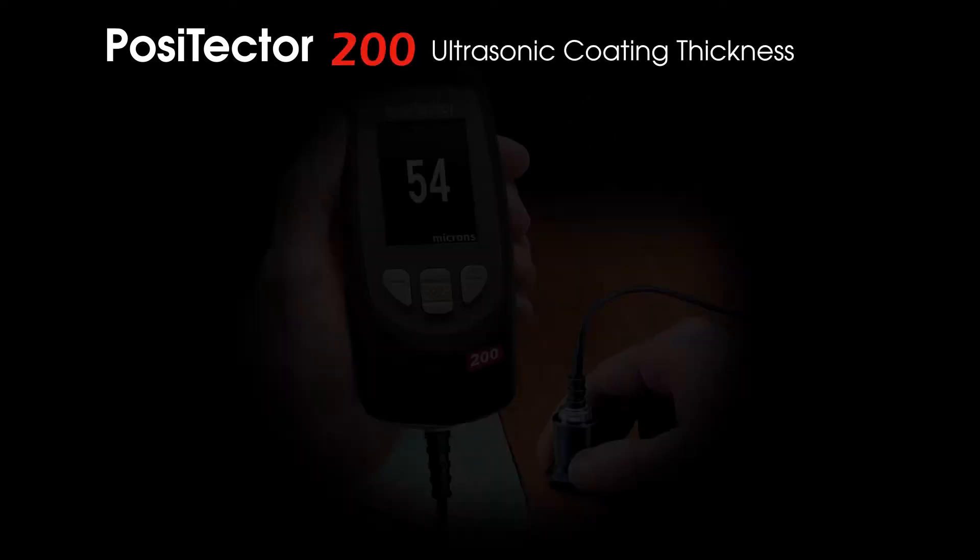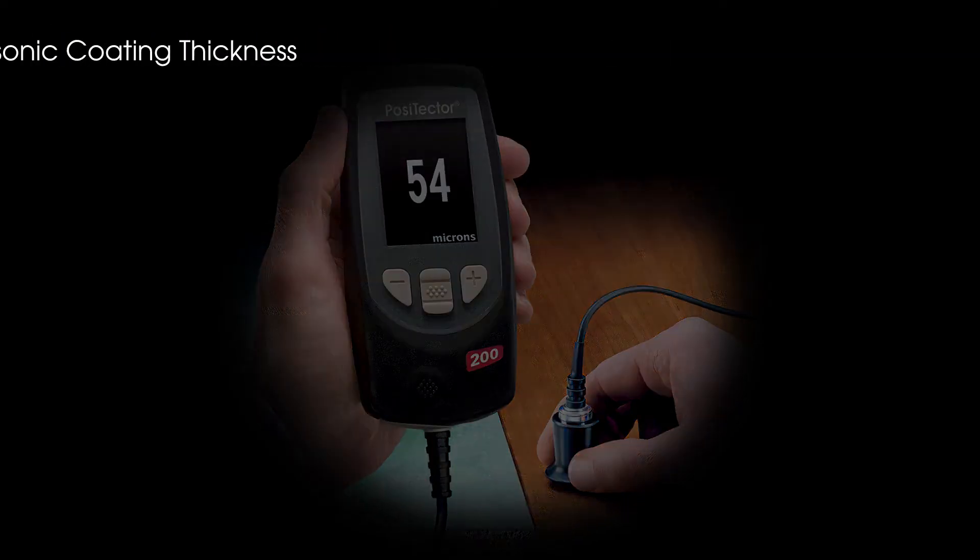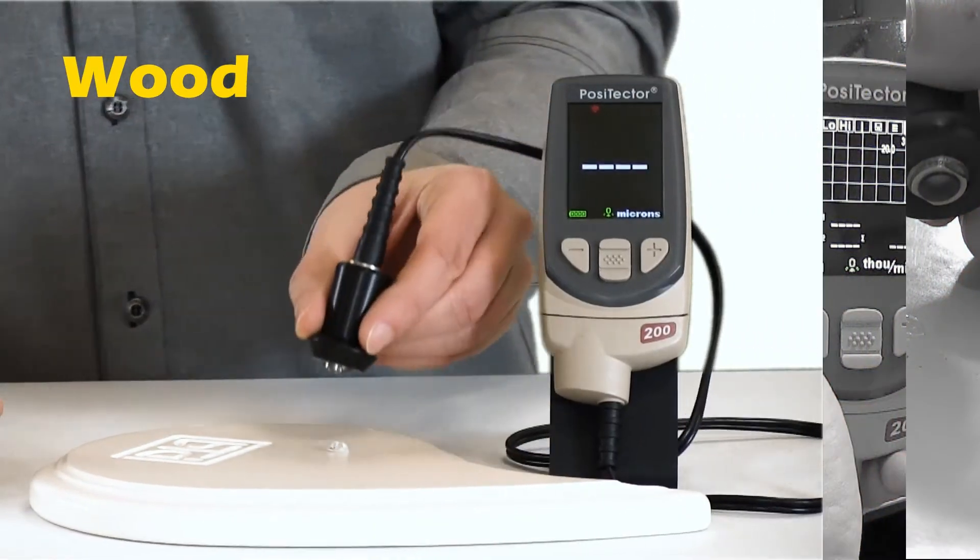The Positector 200 is uniquely able to measure the thickness of up to three individual layers of coatings on non-metallic substrates such as wood, plastic, and concrete.